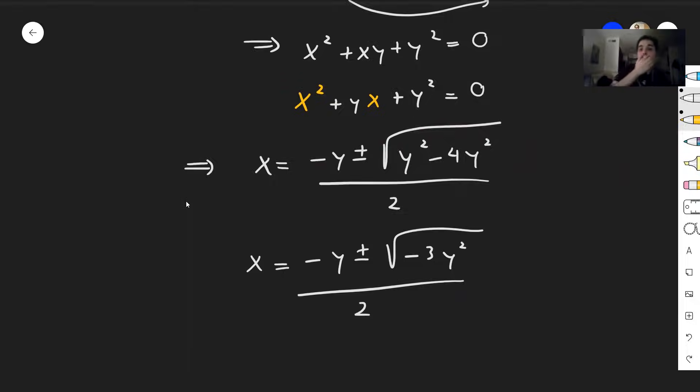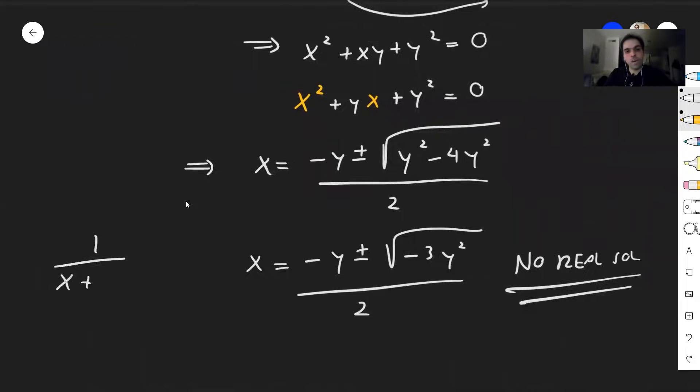And already here we can say this has no solutions in the real numbers, so no real solution. So there are no x and y real, such that 1 over x plus y equals 1 over x plus 1 over y.